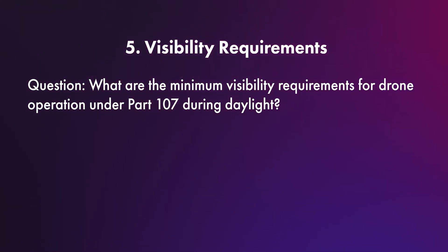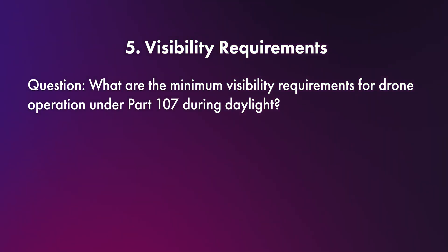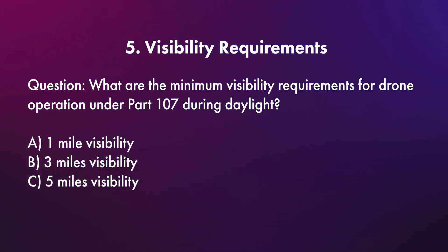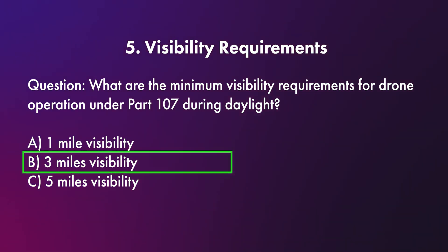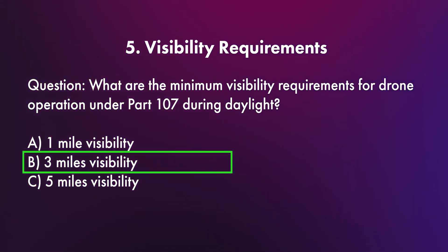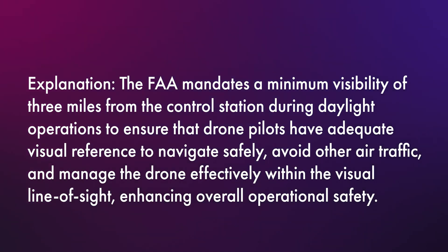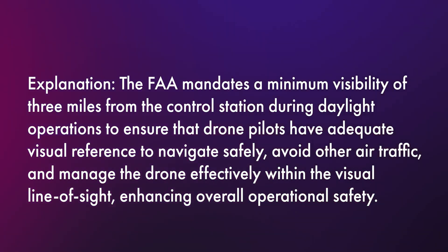Question five: what are the minimum visibility requirements for drone operation under Part 107 during daylight — A) 1 mile visibility, B) 3 miles visibility, or C) 5 miles of visibility? The correct answer is B, 3 miles of visibility. The FAA mandates a minimum of 3 miles from the control station during daylight operations to ensure that pilots have adequate visual reference to navigate safely.